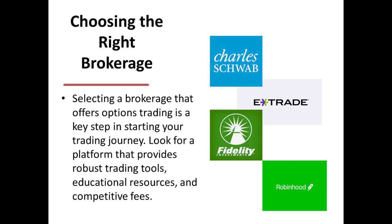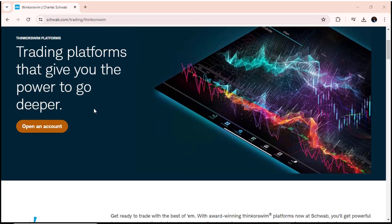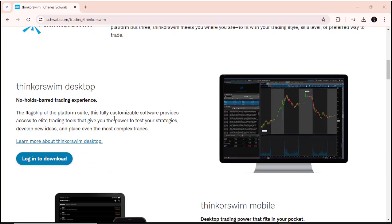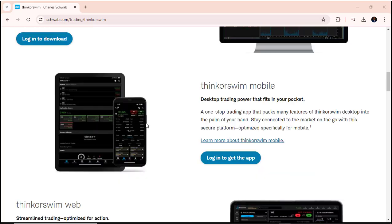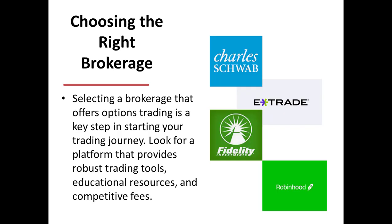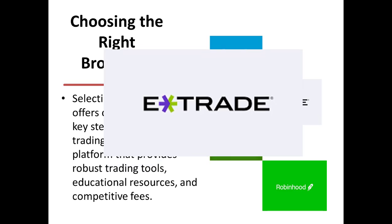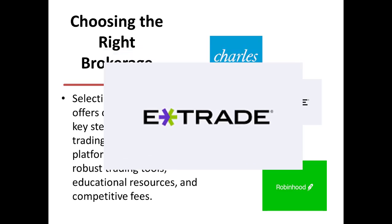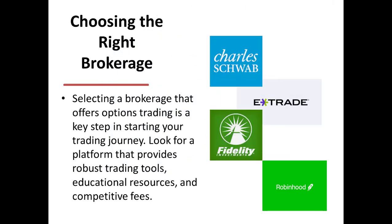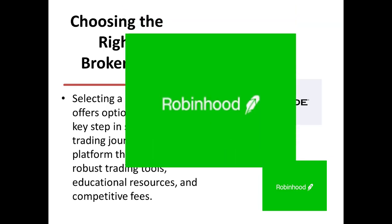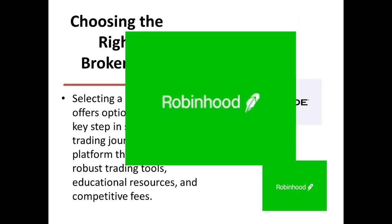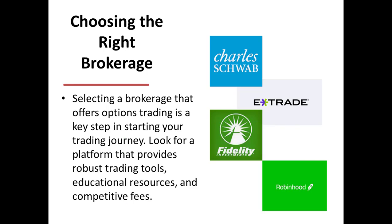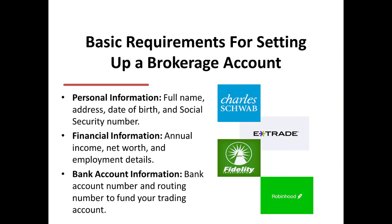Charles Schwab recently acquired TD Ameritrade's thinkorswim platform, which is known for its advanced trading tools and comprehensive educational resources. E-Trade offers a user-friendly interface and strong customer support, while Robinhood is popular for its commission-free trades and easy-to-use mobile app.